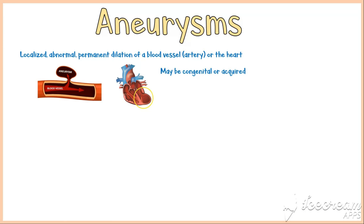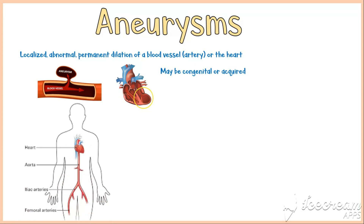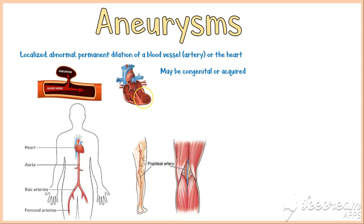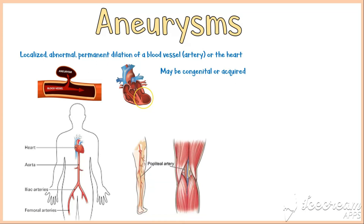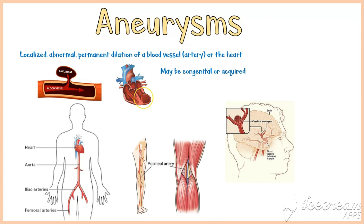Aneurysms can occur anywhere in the body, but are more common in the aorta, iliac, and femoral arteries, popliteal artery, and cerebral arteries, especially in the circle of Willis. In addition, mesenteric, splenic, and renal arteries are also affected.